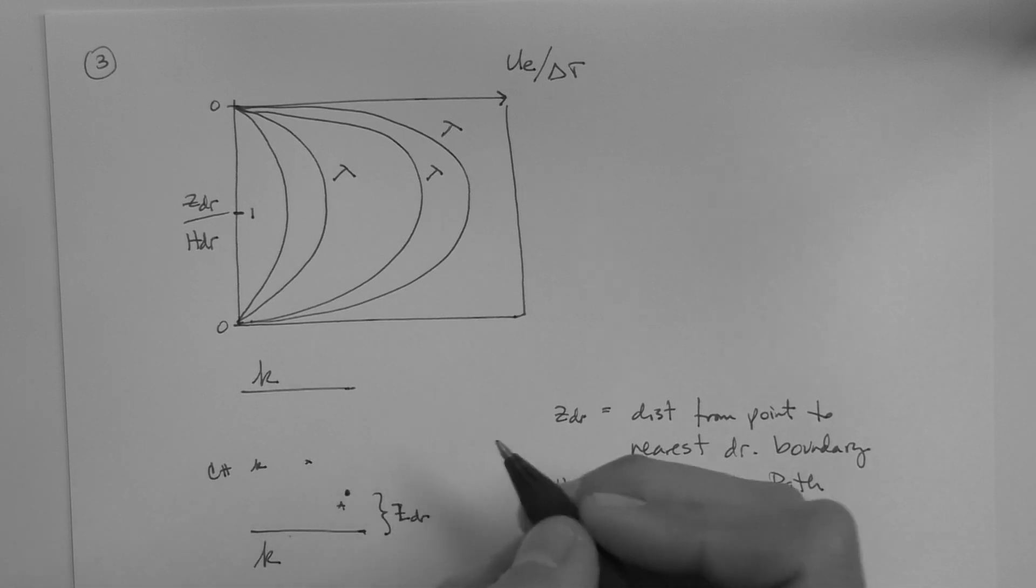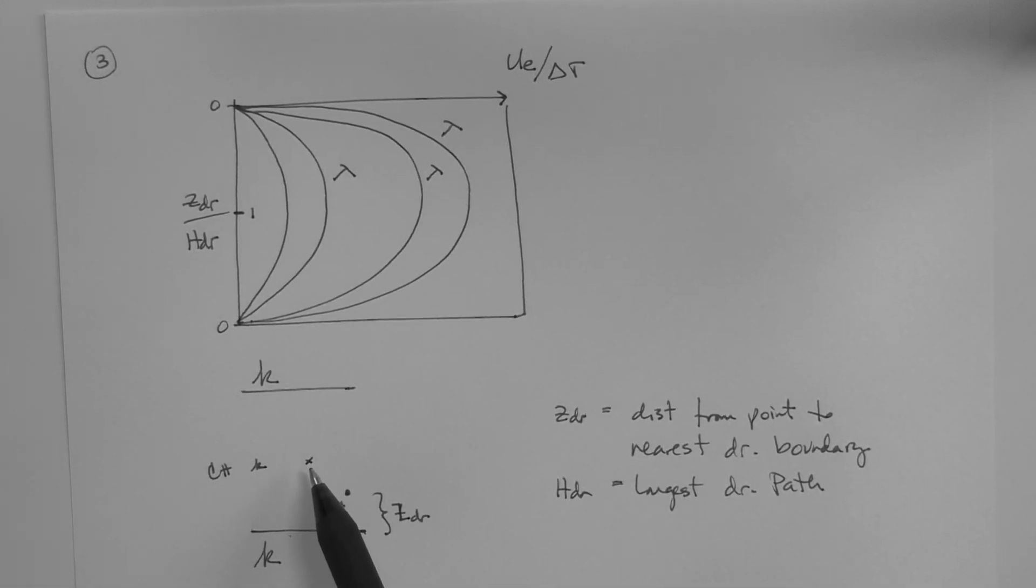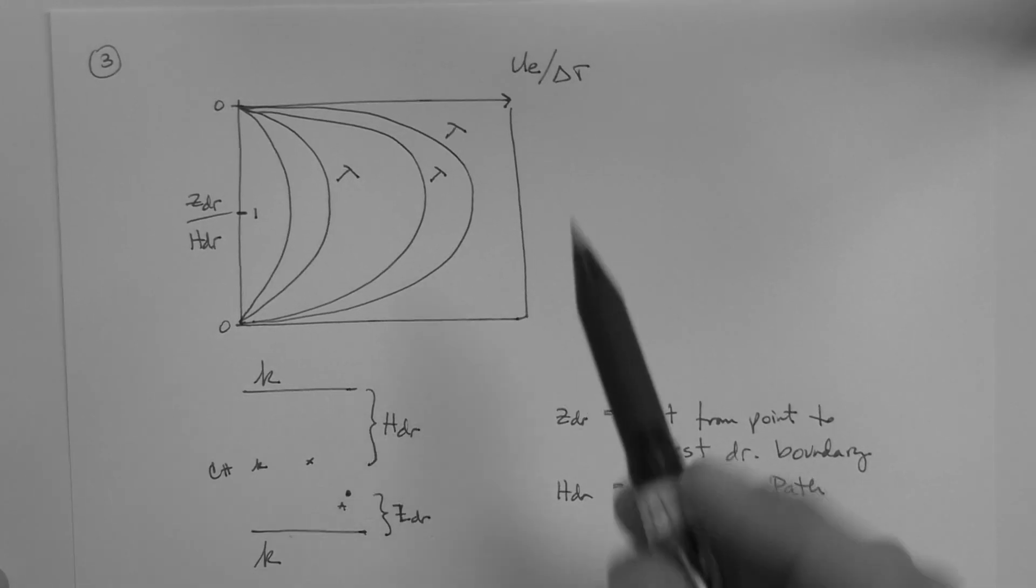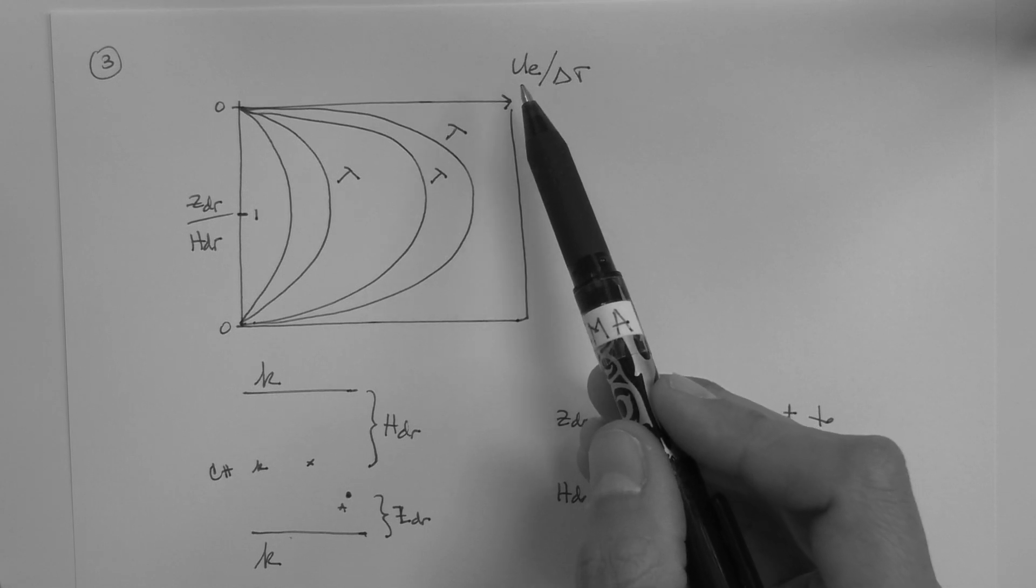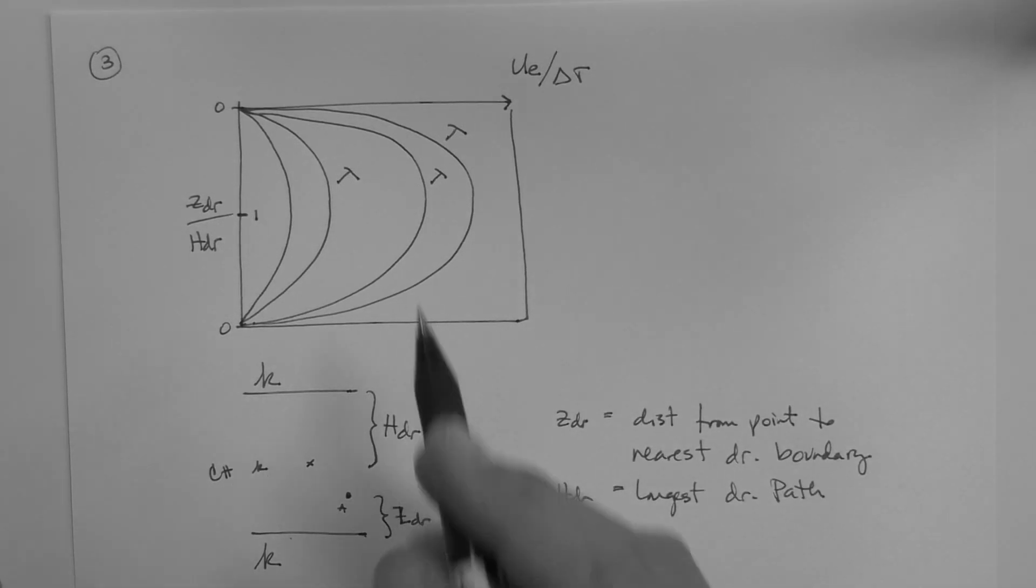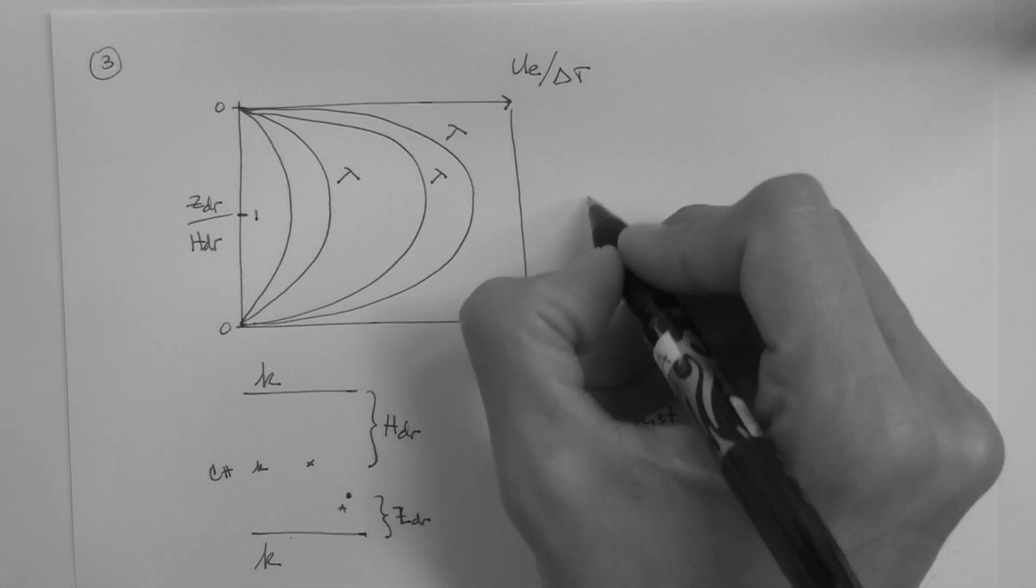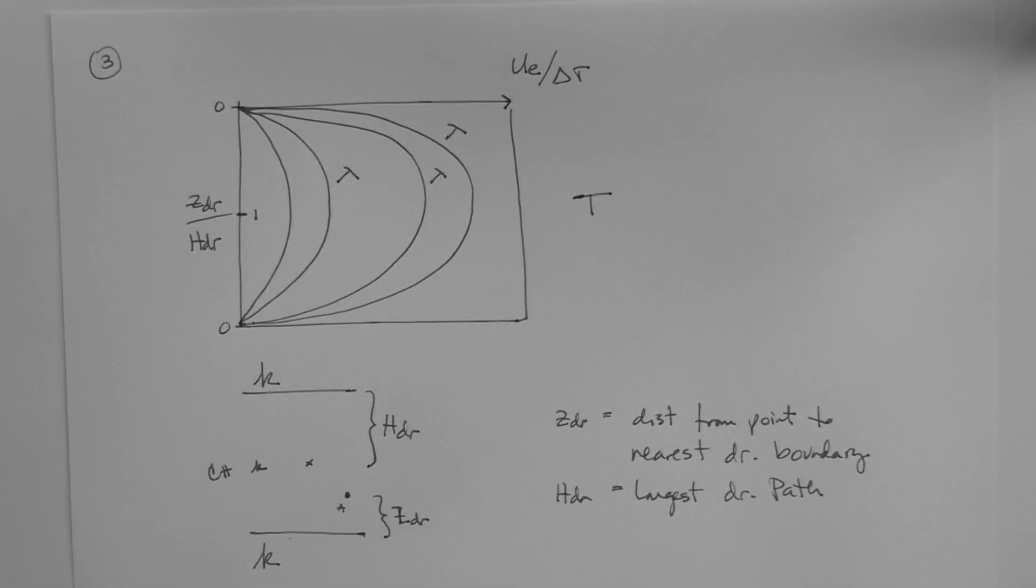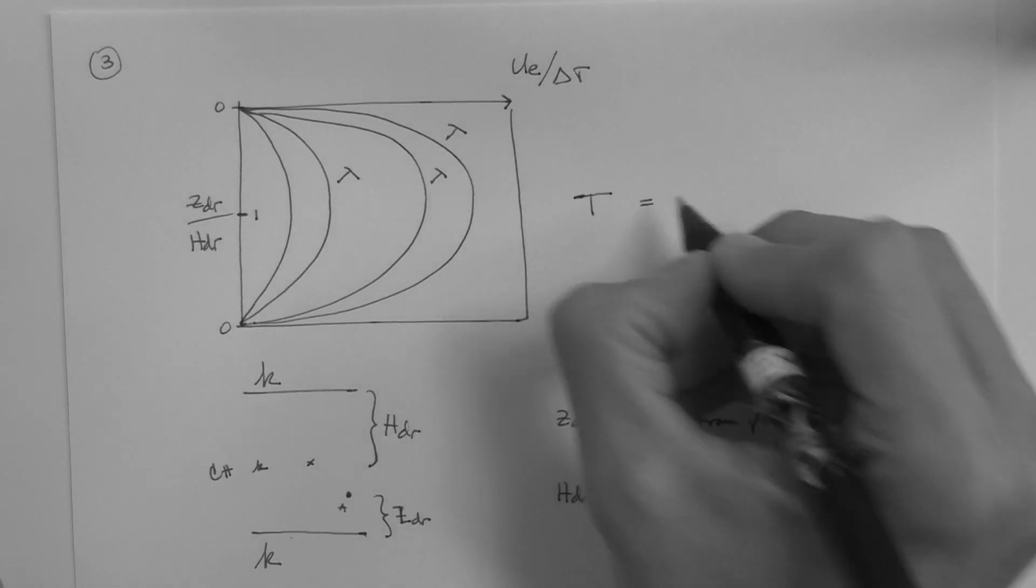If you wanted to escape the layer, as a water droplet, going either up or down, the worst place would be right here, the middle of the layer. Because you would either have to travel half of the layer up or half of the layer down. If you were up here, you would just travel a short distance up. And if you were down here, you would travel a short distance down. So, HDR is, for our problem, that distance. The excess pore pressure is generally what we're looking for. Delta sigma is known, that's the load.